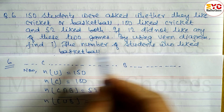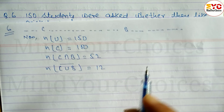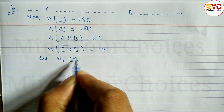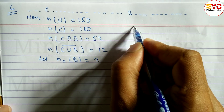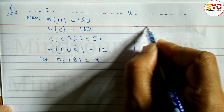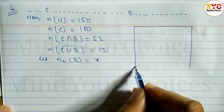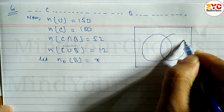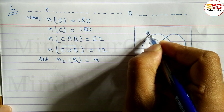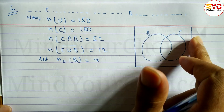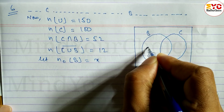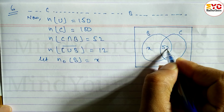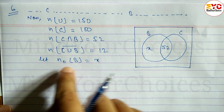By using a Venn diagram, we draw two subsets — one for cricket (C) and one for basketball (B). Let only-B = X. At the middle intersection, we write 52. Only-C is the total cricket students minus the intersection: 100 − 52 = 48. So only-C = 48. The outside region (did not like either game) = 12.